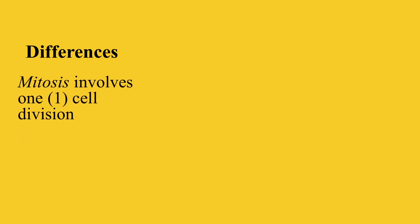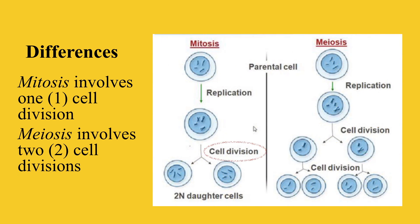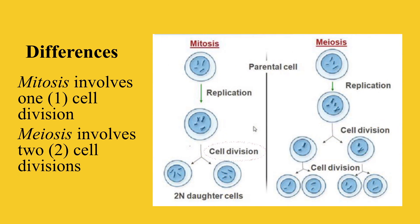Cell production via mitosis only requires one cell division. In contrast, the production of cells via meiosis requires two cell divisions.